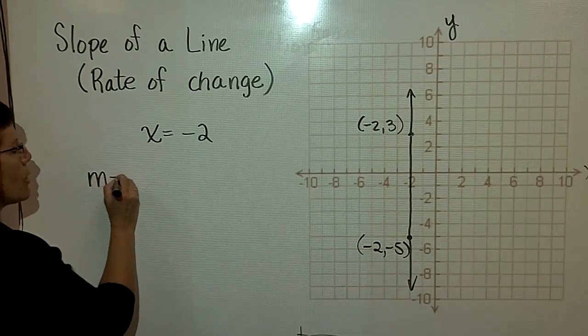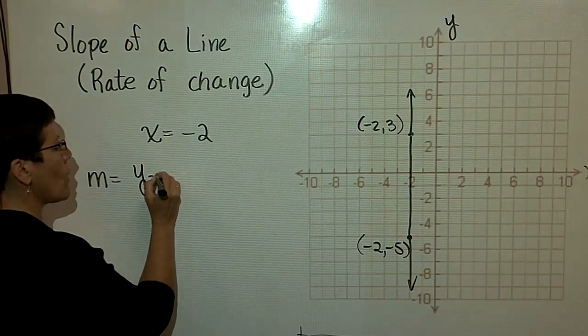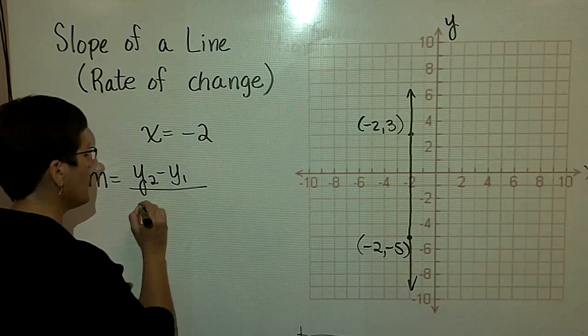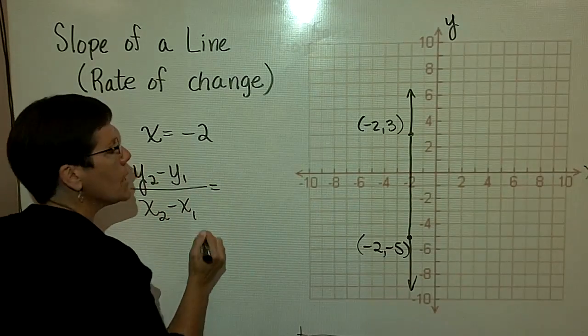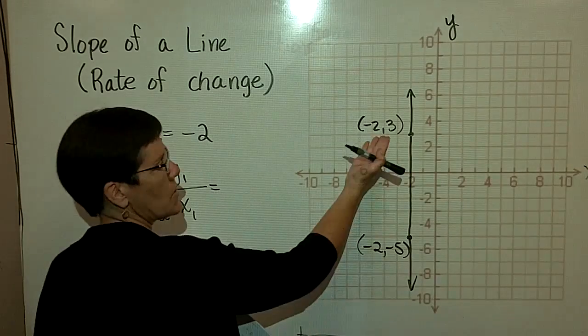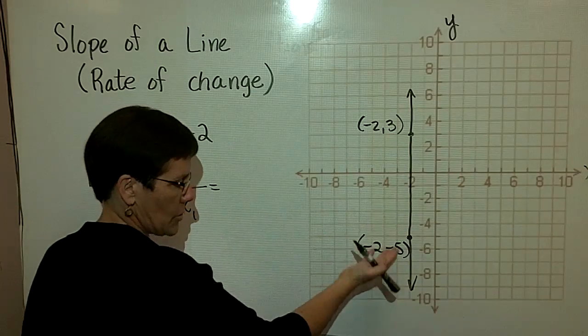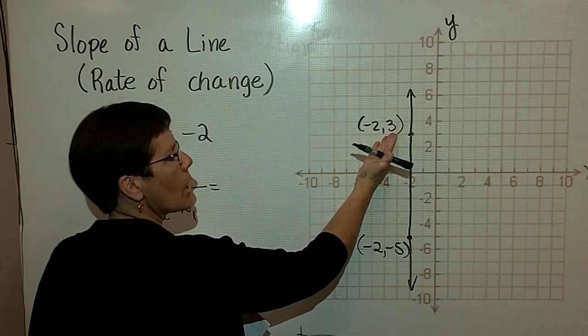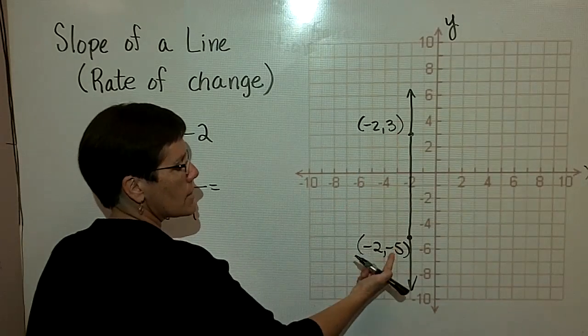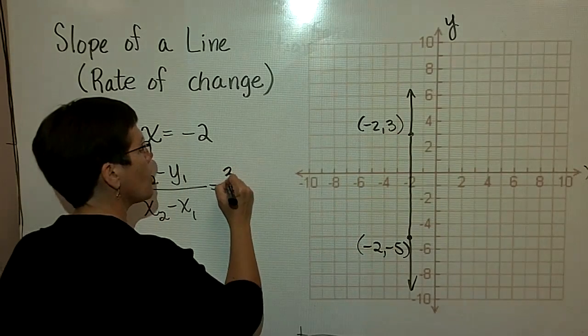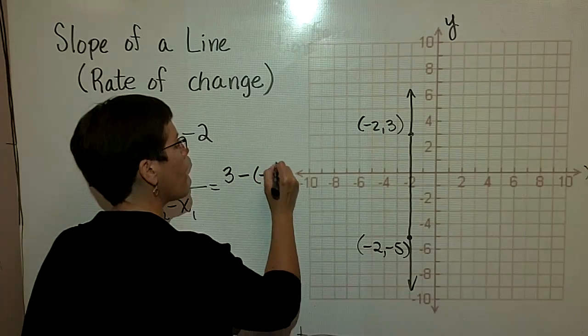Using these two ordered pairs, I'd like to find the slope of that line. Again, defined as y₂ minus y₁ divided by x₂ minus x₁. I'm going to use this as my second ordered pair versus that one. So I have to start with that y value, that 3, and subtract that negative 5. So 3 minus a negative 5 is 8.